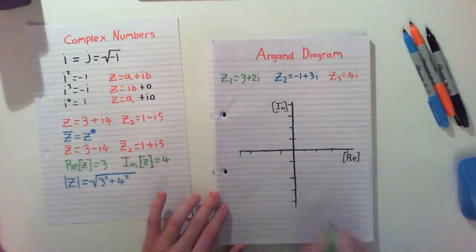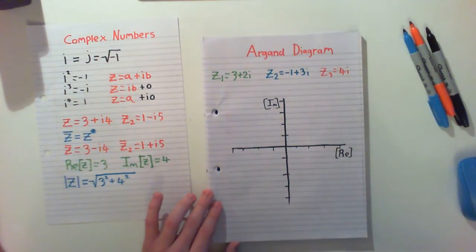So we're going to plot our first one. Think of plotting this, you can ignore the i and think of this as X and Y coordinates, where i as the imaginary is in the Y and the real is in the X.